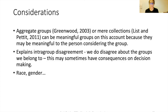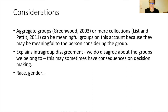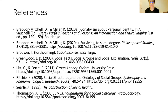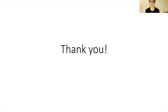That's how the account works in summary. Lastly, I want to run through some brief thoughts. Aggregate groups or mere collections can be meaningful groups on this account because they are meaningful to the person considering the group. This account also explains intra-group disagreement — we do disagree about the groups we belong to, and this may have consequences on our decision-making. When we consider race, gender, and other controversial topics, a subjectivist approach might explain those differences and is something we should keep in mind. Thank you for your time and I welcome any feedback.